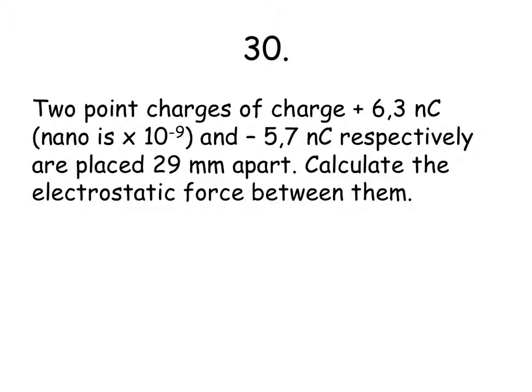The next one is an electrostatic example, and here I've been given two point charges. I get two values of coulombs, so two charge values, and I am told that nanos times 10 to the negative 9. I'm not sure that they're obliged to tell you that it's times 10 to the negative 9, but it's nice of them to do so. And they are placed the distance apart. Remember that millimeters again needs to be changed into meters.